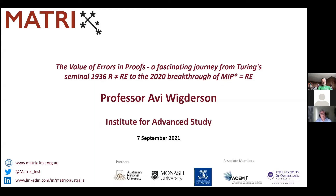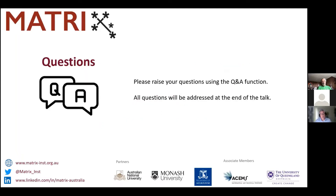Today Avi will talk about a recent result — the value of errors in proofs — a fascinating journey from Turing's seminal 1936 result that R is not equal to RE, to the 2020 breakthrough of MIP* equals RE. We'll reserve question time for after the talk. Please submit your questions through the Q&A function at the bottom of your Zoom screen.